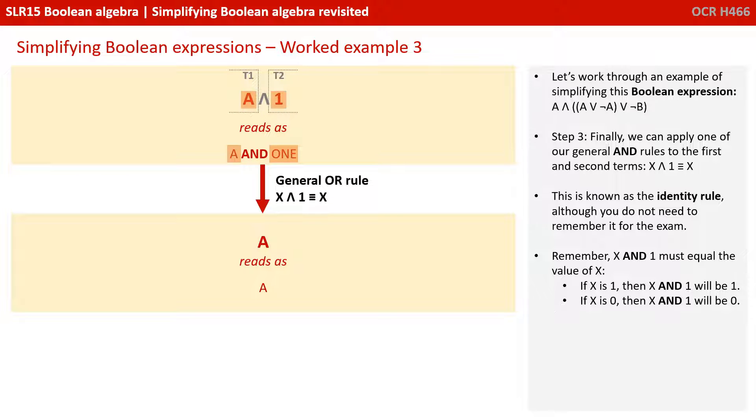Finally, we can apply one of our general AND rules to the first and second terms, the identity rule. Remembering that X and 1 must equal whatever the value of X is. So if X is 1, then X and 1 will be 1. And if X is 0, then X and 1 will be 0. Well here we have A and 1, so the simplification is A.